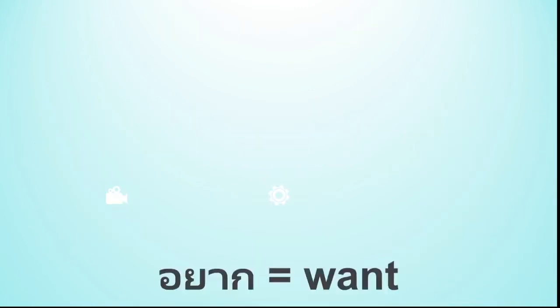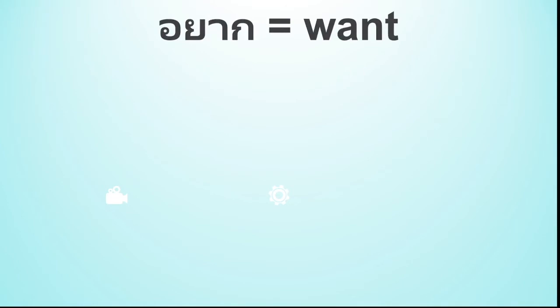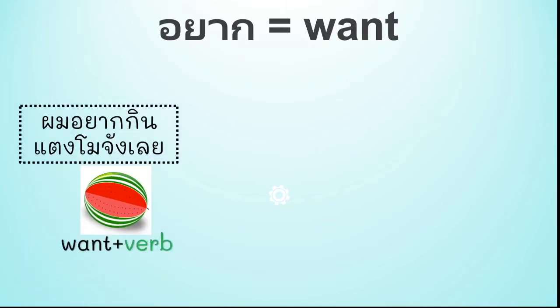And for the word อยาก, which means 'want.' Here is how to use 'want': อยาก is followed by a verb. ผมอยากกินแตงโมจังเลย — I really want to eat แตงโม. แตงโม is a watermelon.